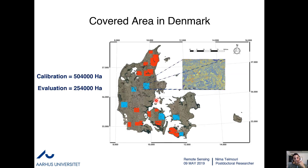This shows the covered area in Denmark. The red color zone is the area we used to train the network, covering about 500,000 hectares. The blue zones show the test area, which we selected for evaluating the network with an area of more than 250,000 hectares. So we analyzed a large area in Denmark to train and then evaluate the network.